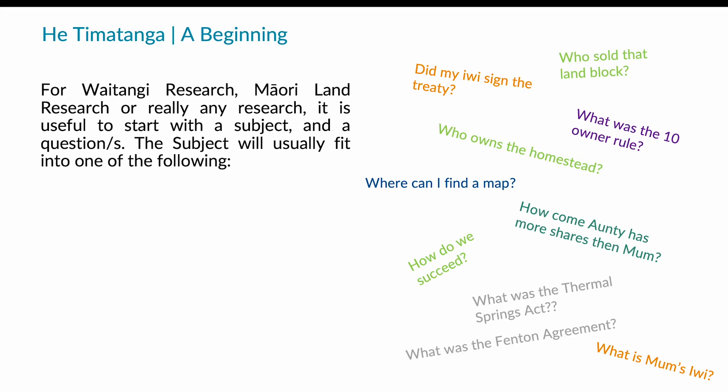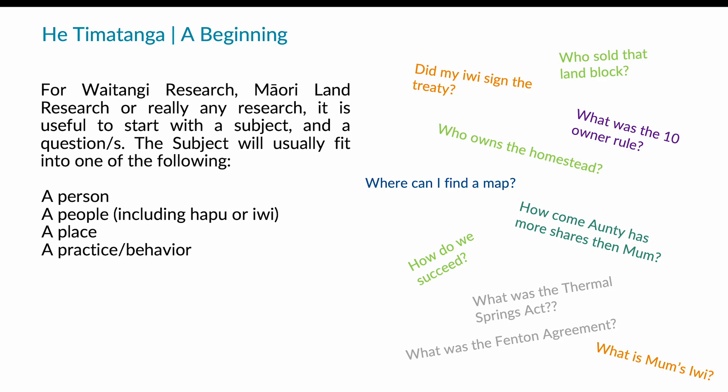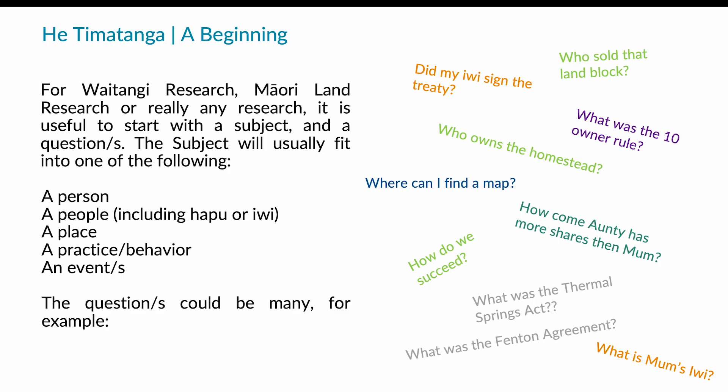For Waitangi research, Māori land research, or really any research, it is useful to start with a subject and a question or questions. The subject will usually fit into one of the following: it might be a person, it might be people — a society, hapū, or iwi — it might be a place, a wāhi, a particular area, or it might be a particular practice or behaviour, a tikanga, a kawa, or it could be an event — something that had happened at a particular point in time.